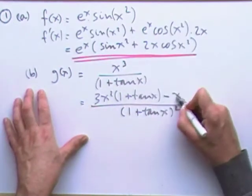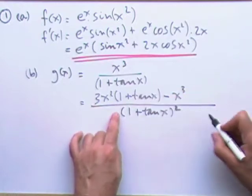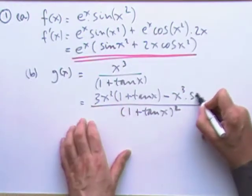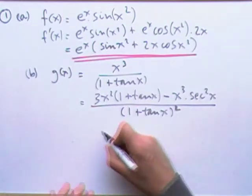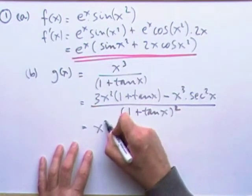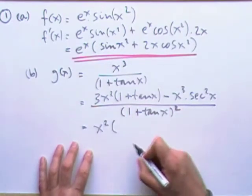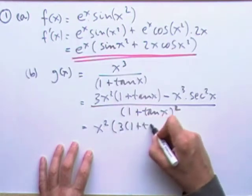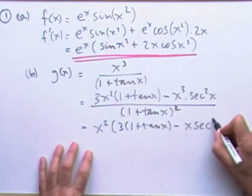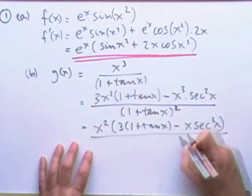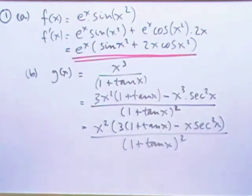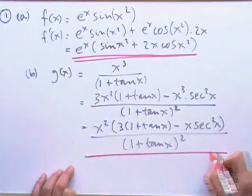Minus, leave the first one alone and now differentiate the other one. So tan x is, 1's going to go to 0 because it's a constant, and tan x goes to sec squared x. Then it's just a case of can you tidy that up at all? You could take out x squared times 3 times 1 plus tan x minus x sec squared x all over 1 plus tan x squared.